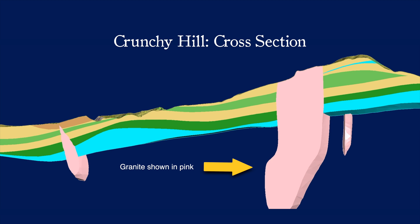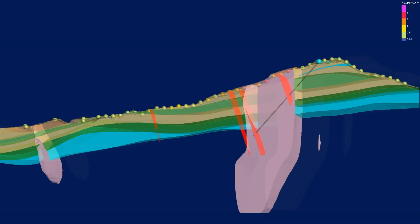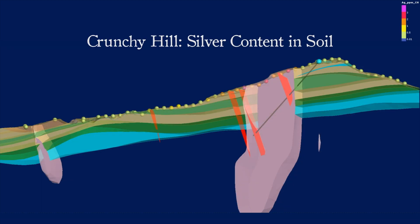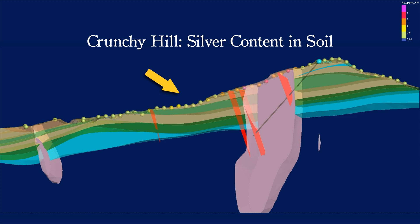On this particular one, you can see the various geological layers that we've carried from one side of the hill to the other. On this particular section, you see the little beads at the surface of the geological slice — those are the values of silver in the soil samples, and the warm colors indicate higher silver content.